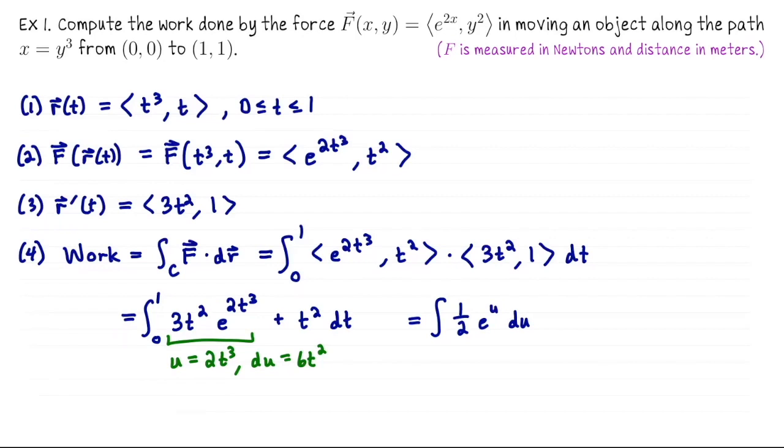When t is 0, u is 2 times 0, so the lower bound for u is also 0. When t is 1, u is 2 times 1³. So we'll integrate from 0 to 2, this integral with respect to u. And then for the second term let me go ahead and anti-differentiate t² to get ⅓t³ evaluated at 1, subtract off evaluating at 0.